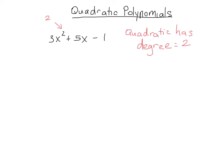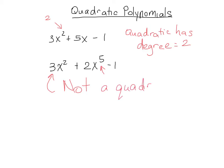However, let's look at another one. Let's say we had 3x squared — so it starts the same way — plus 2x to the fifth minus 1. Is our highest exponent still 2? No, it's not. We have a 5 right here, which means that this is not a quadratic. This one is, this one is not, because the highest exponent of a quadratic has to be 2.